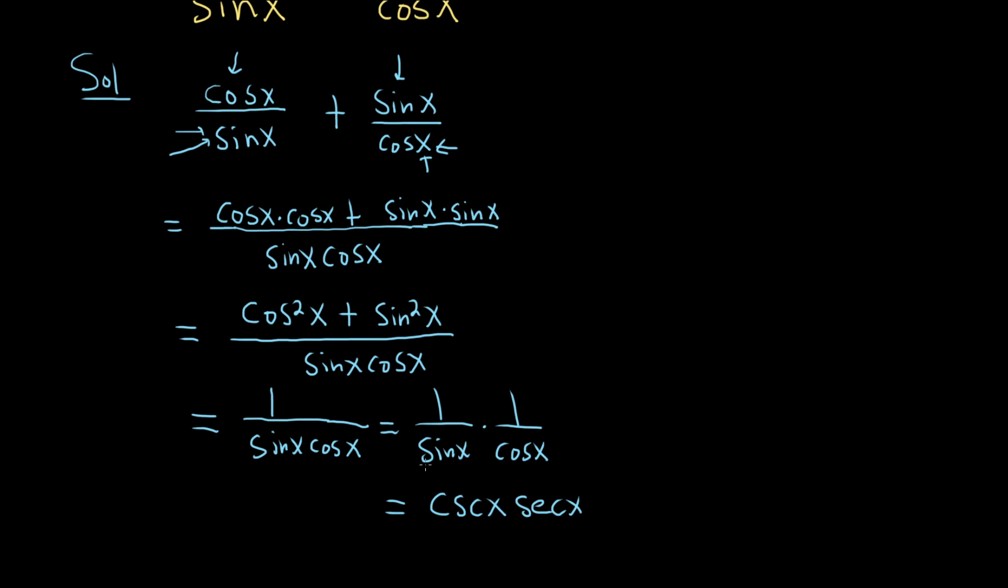The way I memorize these is it's the other letter. Sine has an s, cosecant has a c. Cosine has a c, secant has an s. So cosecant is 1 over the 1 with the other letter. Secant is 1 over the 1 with the other letter.